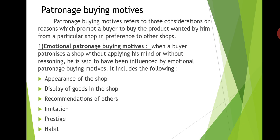The second type is patronage buying motive. Patronage buying motives refer to those considerations or reasons which prompt a buyer to buy the product from a particular shop in preference to other shops. These are considerations or reasons which make a buyer patronize a particular shop in preference to other shops while buying a product. There are two types: emotional patronage buying motive and rational patronage buying motive.